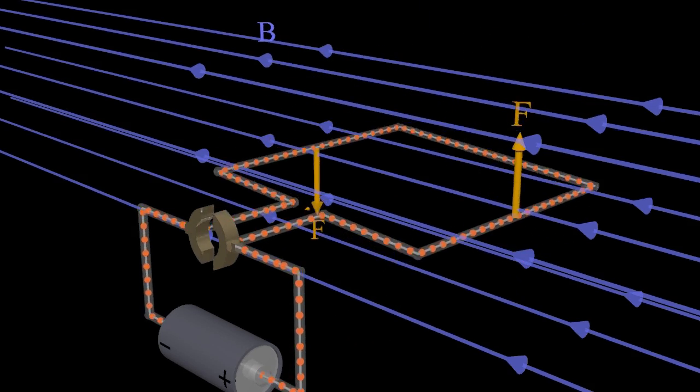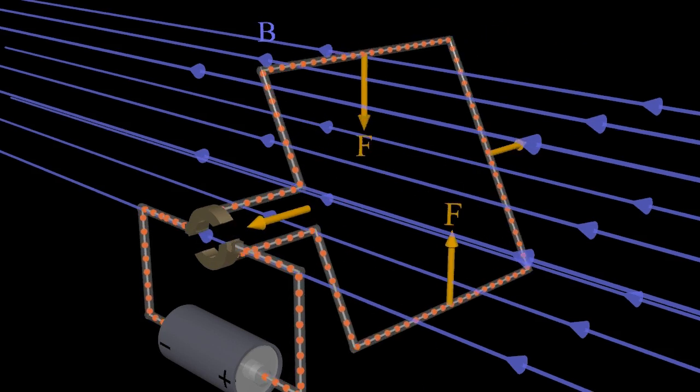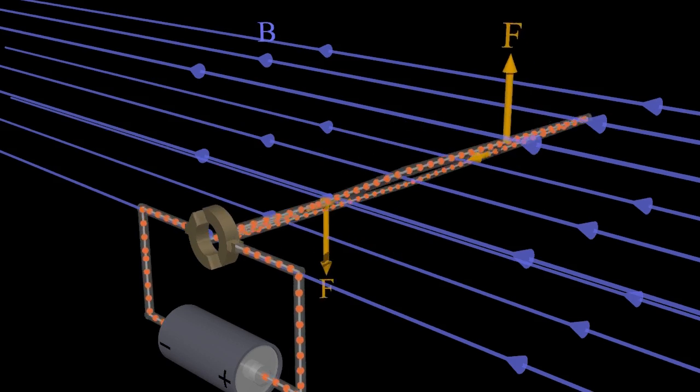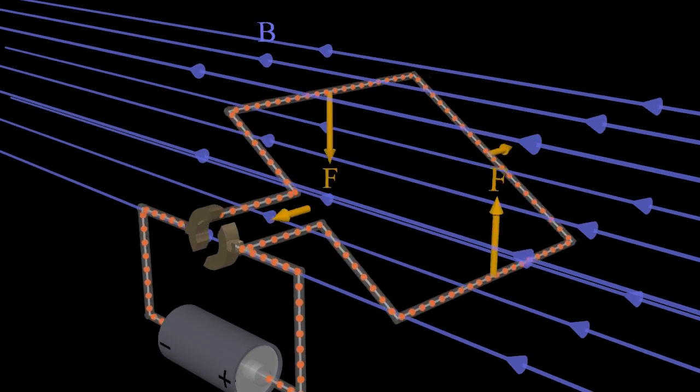The current loop experiences a torque due to the offset forces on the top and bottom sections of the loop. The forces on the front and back segments of the loop exactly cancel, so they do not contribute to the net torque on the loop.